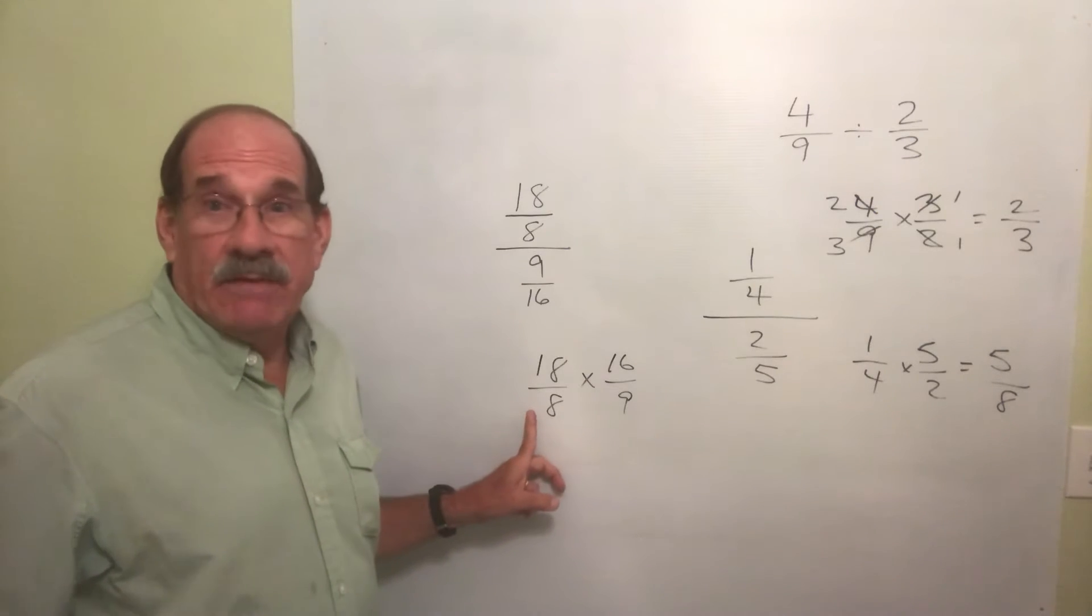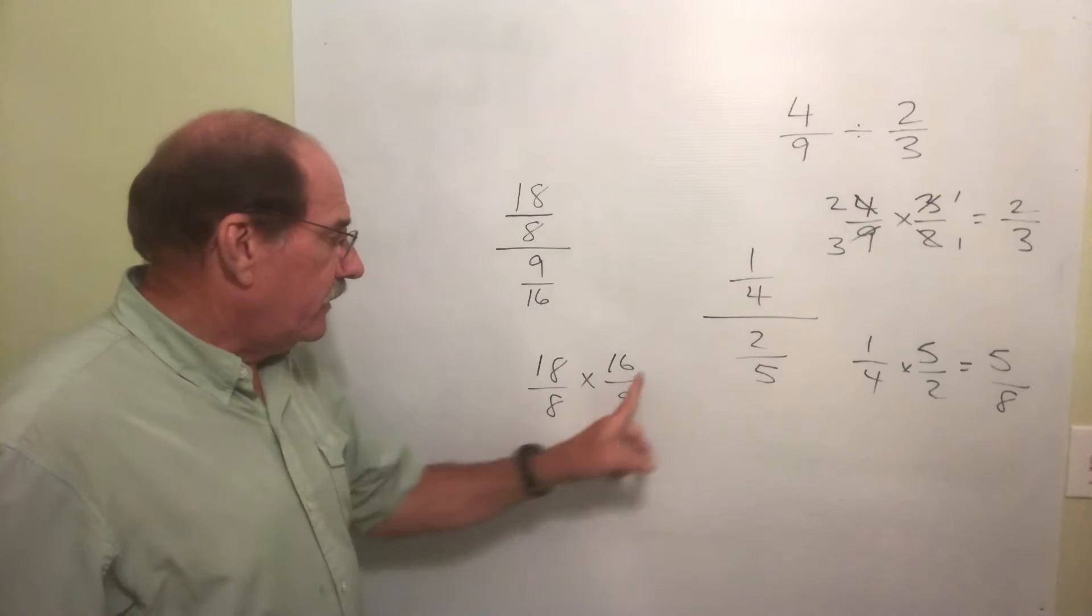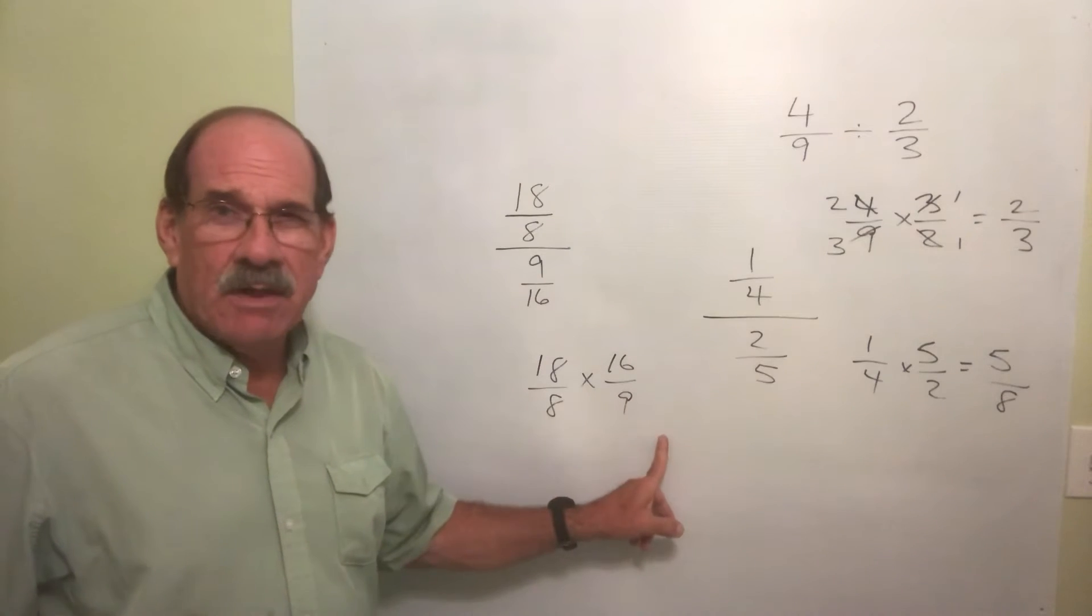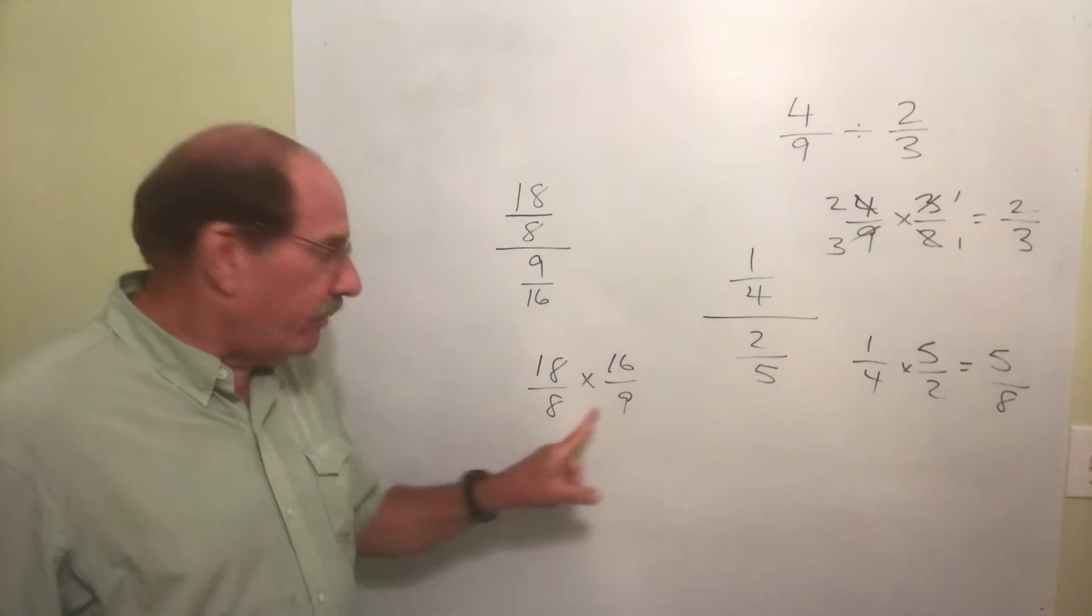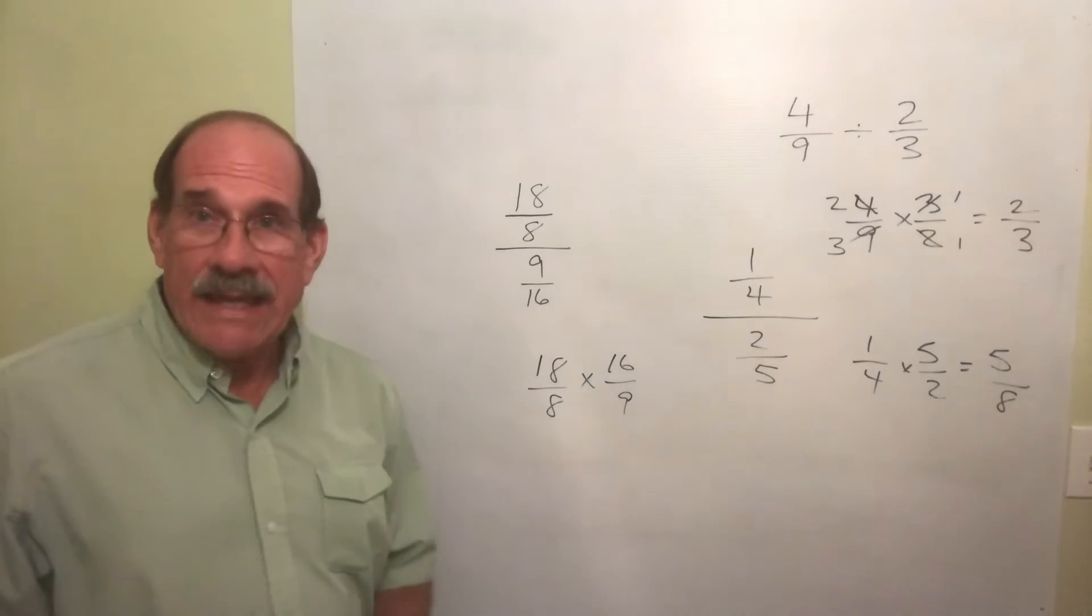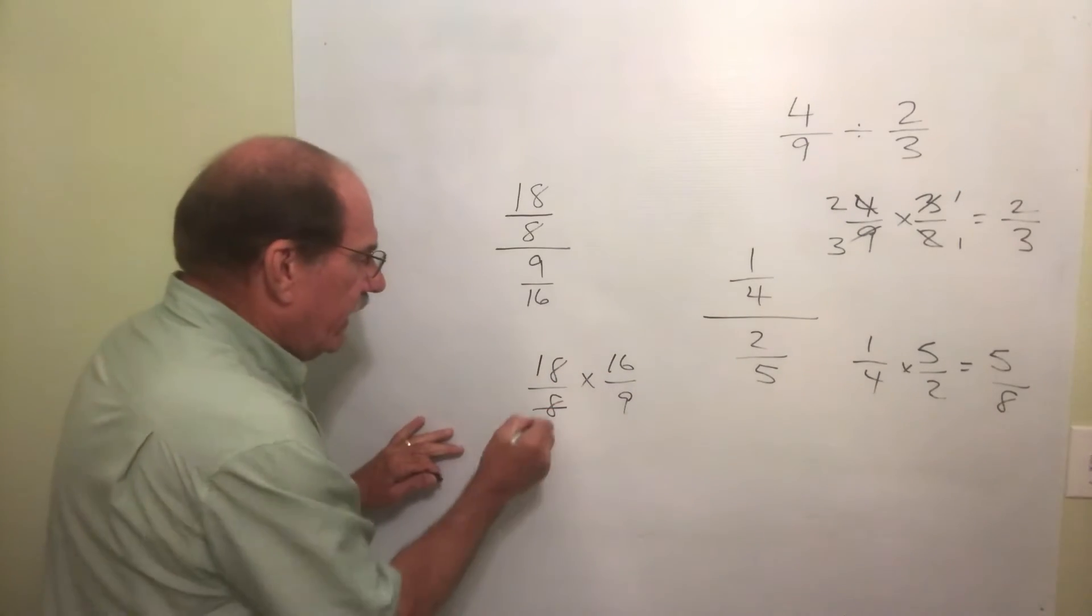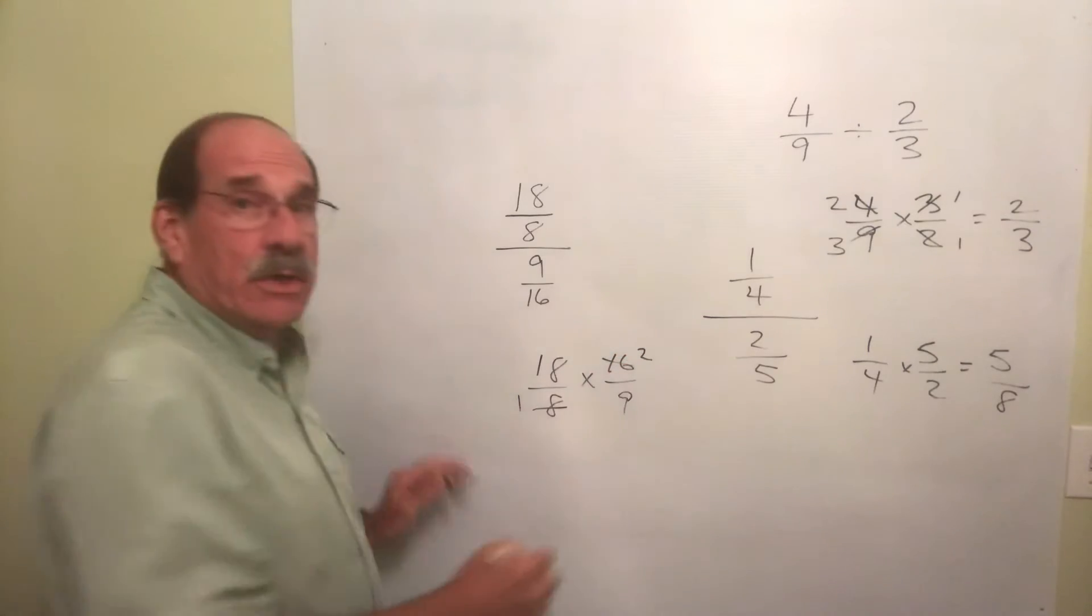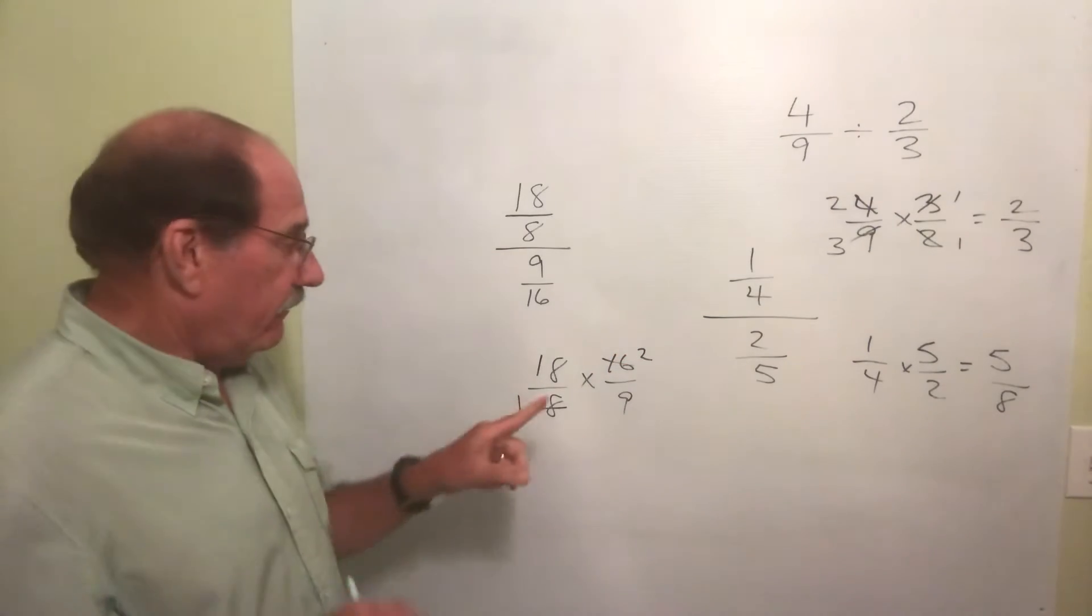I can divide them by the same number if I want to. These I can't divide by the same number. But what about the top of this and the bottom of this? Yeah, let's do that. I can divide both those by 8. Divide this by 8, that's 1. Divide this by 8, that's 2. I can divide...